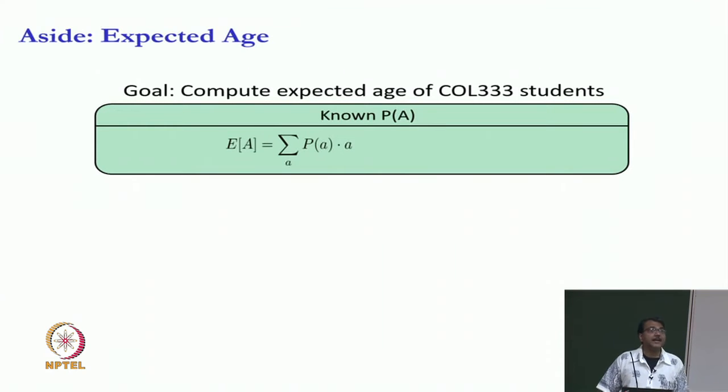Then can you compute the expectation? You will simply use the formula for expectation of a discrete random variable and you will just sum over a, p of a times a, where a is your age, p of a is given to us, it is the probability of each age. And so you can say 0.6 into 20 plus 0.2 into 21. Now, this is the easy part.